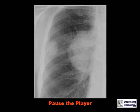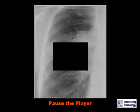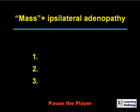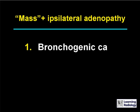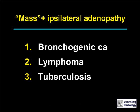Here's the next differential. The differential is a mass or density in the lung with ipsilateral hilar adenopathy. The three causes would be bronchogenic carcinoma, lymphoma, and tuberculosis.